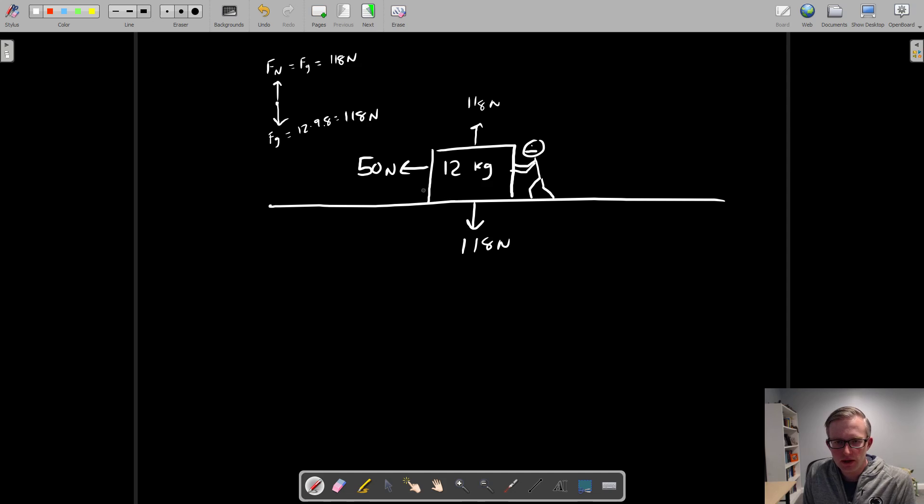Ordinarily in a problem, we'd just be done. We'd look at the force applied in the horizontal direction, call that unbalanced, divide by the mass, get the acceleration. In this circumstance though, there is an interaction of friction between the bottom of this box and the ground, so we need some additional information.